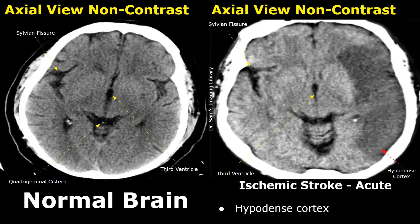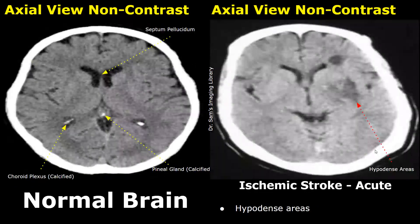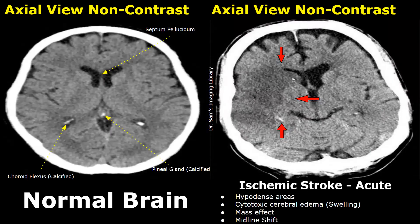In acute ischemic stroke, the time from onset is 24 hours to one week, and its features include a hypodense cortex. Here is another case of acute ischemic stroke — we can clearly see hypodense areas within the brain. As time passes, more features are seen. Along with hypodense areas, we will find cytotoxic cerebral edema, that is swelling, which will cause mass effect and may cause a midline shift.